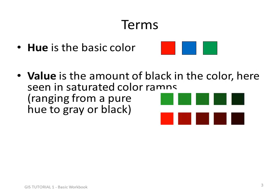First is the concept of hue. Hue is the basic color, and value is the amount of black in the color. Here we see saturated color ramps ranging from a pure hue — this is green — all the way to gray or black.